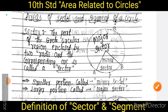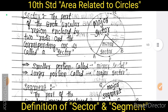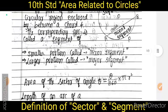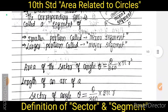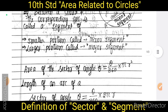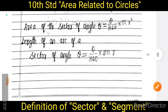We already know the sector definition and the segment definition. Let's look at the sector and the segment — how to find the area of these two. For the sector, there is an angle theta between two radii, represented by theta.